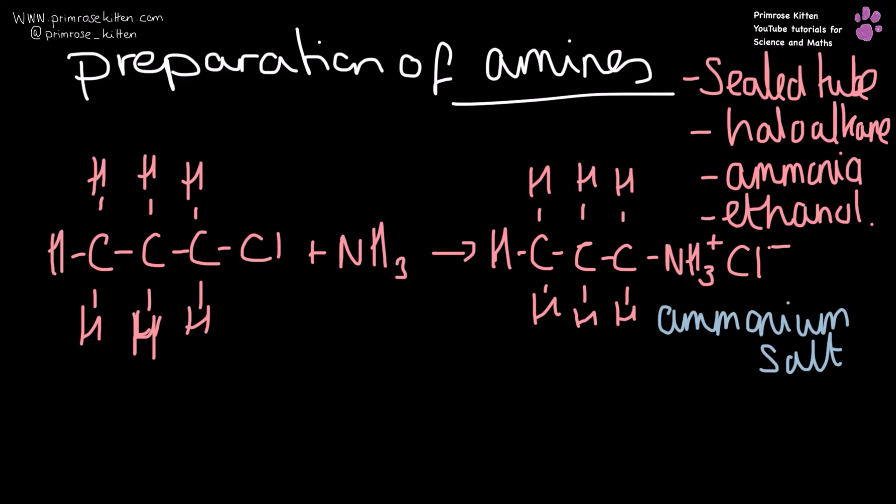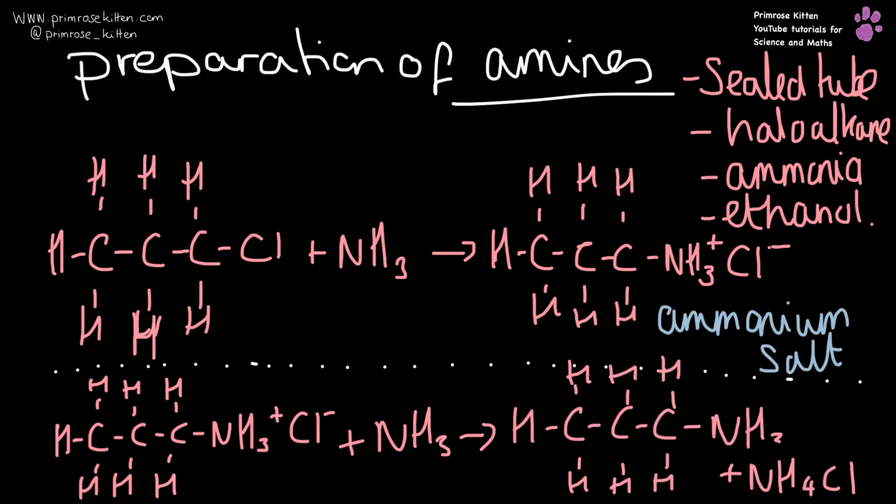Our ammonium salt is just an intermediary here. Take our ammonium salt and add more ammonia onto it. That will further displace things, and we will end up with an amine.